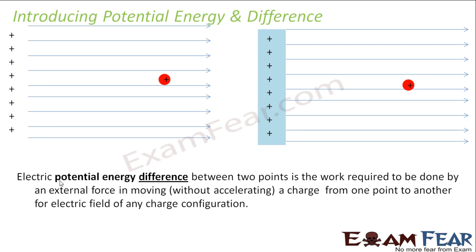According to our previous discussions, electric potential energy difference between two points is the work required to be done by an external force in moving a charge from one point to another, for the electric field of any charge configuration. I don't think you will have any issues understanding this definition because this is what I have been explaining in the previous slides.